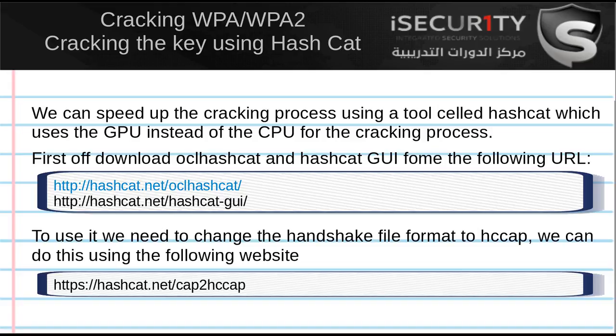We're going to talk about a tool called hashcat, which allows us to crack the key using the GPU instead of the CPU. I'm going to explain how to use the tool from Windows. The reason I'm using Windows is because most devices have easier driver support for graphics cards on Windows. All graphics cards are supported on Windows, whereas you might have trouble finding the driver for Linux.